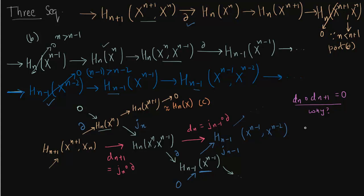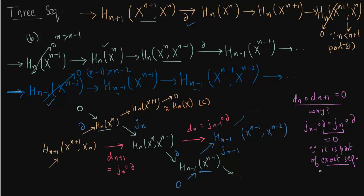The composition dn ∘ dn+1 is zero. To see why, note that the central term in the composition is zero because in any exact sequence, the composition of two consecutive morphisms is zero. This holds for an exact sequence specifically, not just a chain complex. So we have constructed a new chain complex.